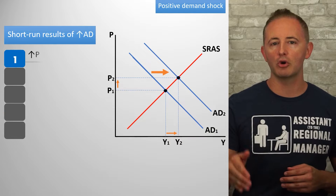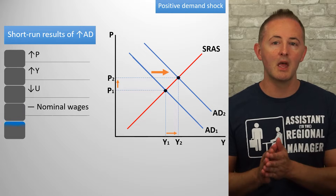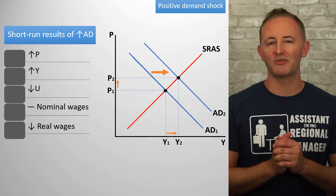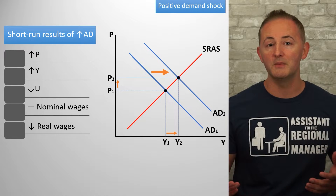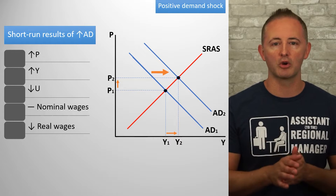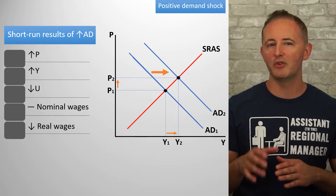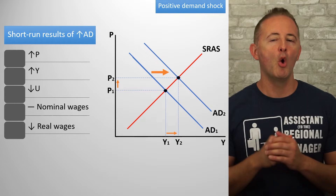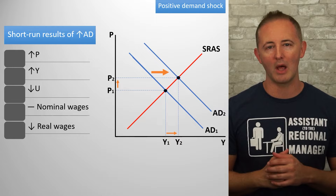So in the short run, unemployment falls. Nominal wages remain fixed, but real wages fall as consumers feel the pressure of a rising price level. So more people have jobs, and that's good, but the purchasing power of workers has fallen, and that's not so good. This is the kind of thing that those of you who want an A in your class and a 5 on the AP exam want to make sure you know, so you can answer those types of next level questions.